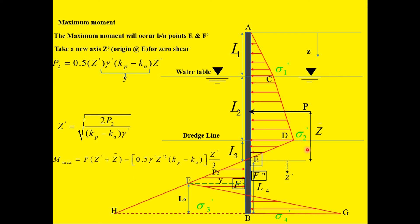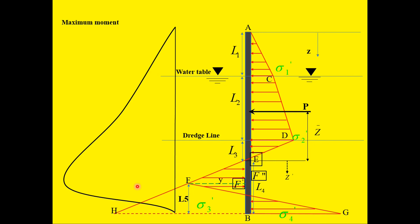Finally, once we have obtained the maximum moment, we can determine the section modulus, which equals the maximum moment divided by the allowable stress. This completes the design of cantilever piles penetrating sandy soil. If you have any questions, please leave them in the comments below. If you found this video helpful, please subscribe. Thank you, and I'll see you in the next video.